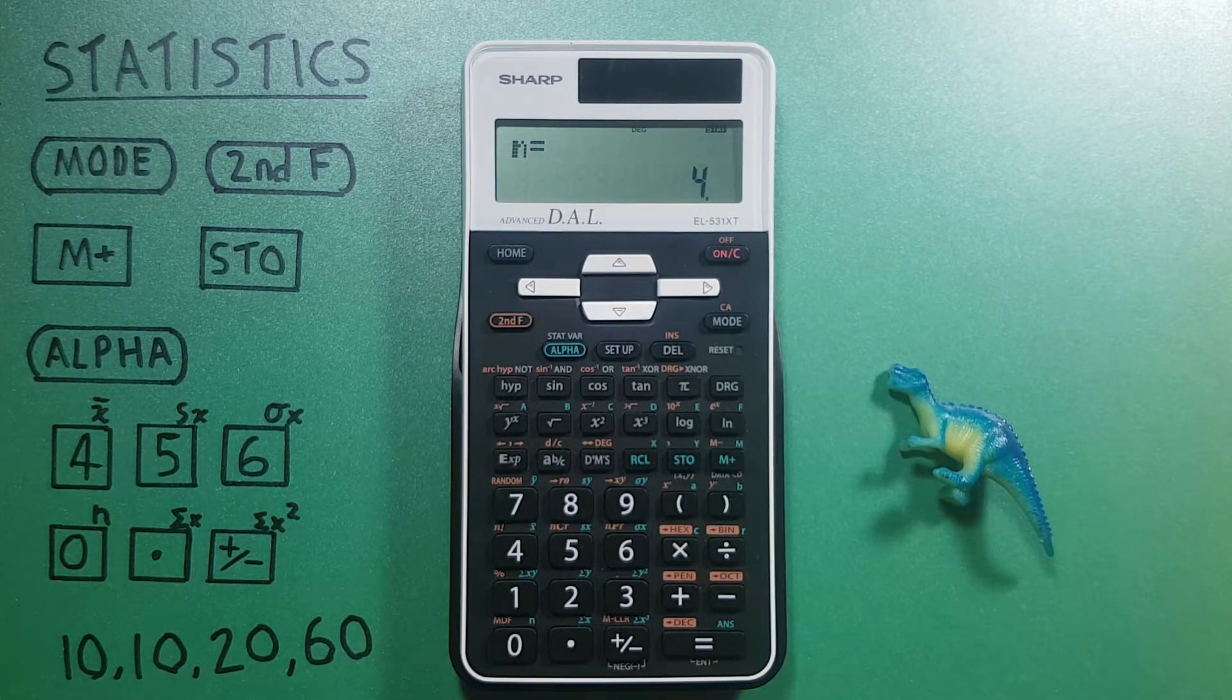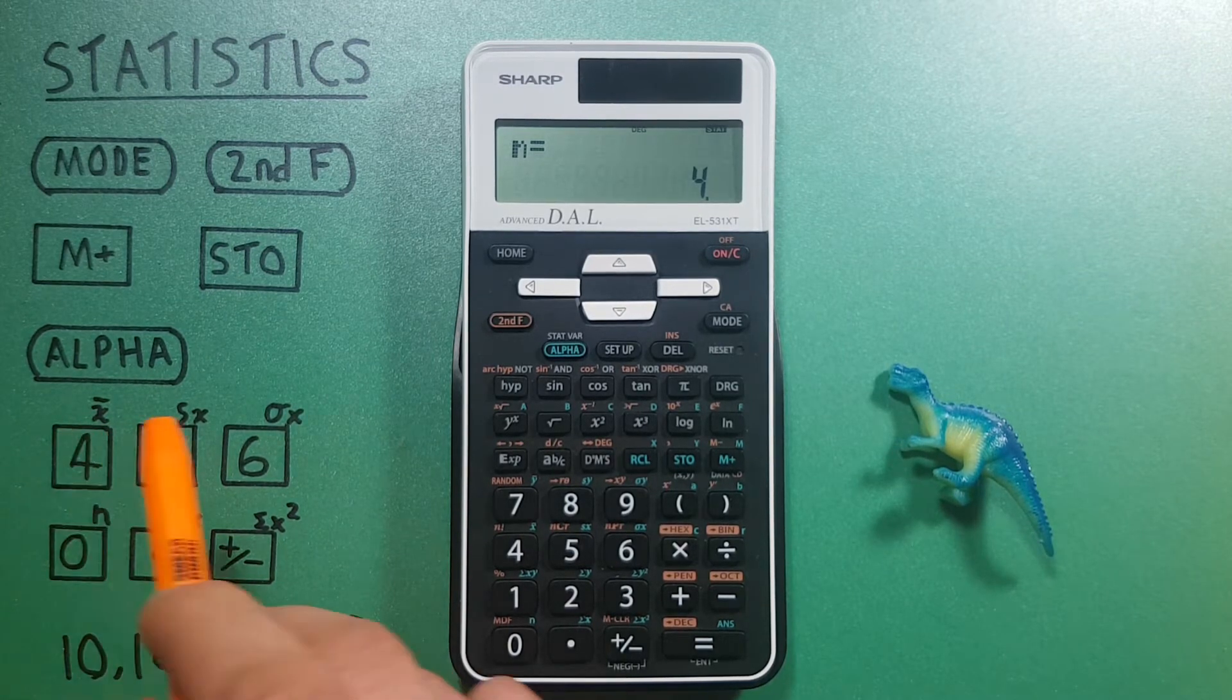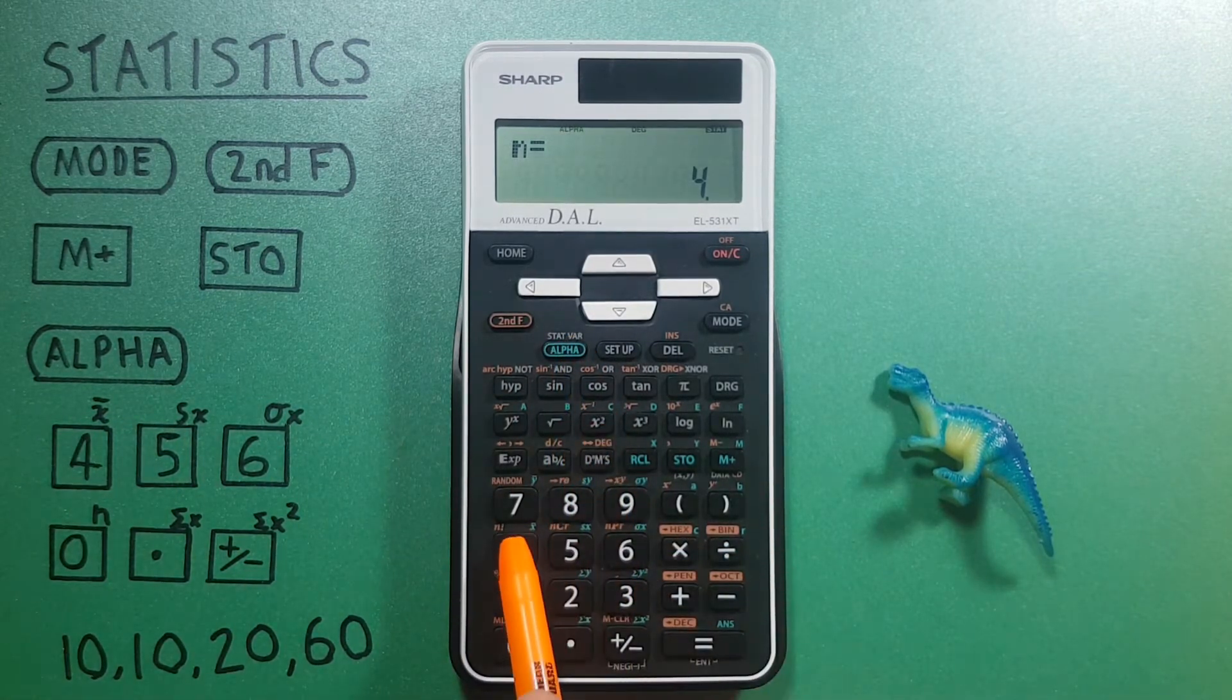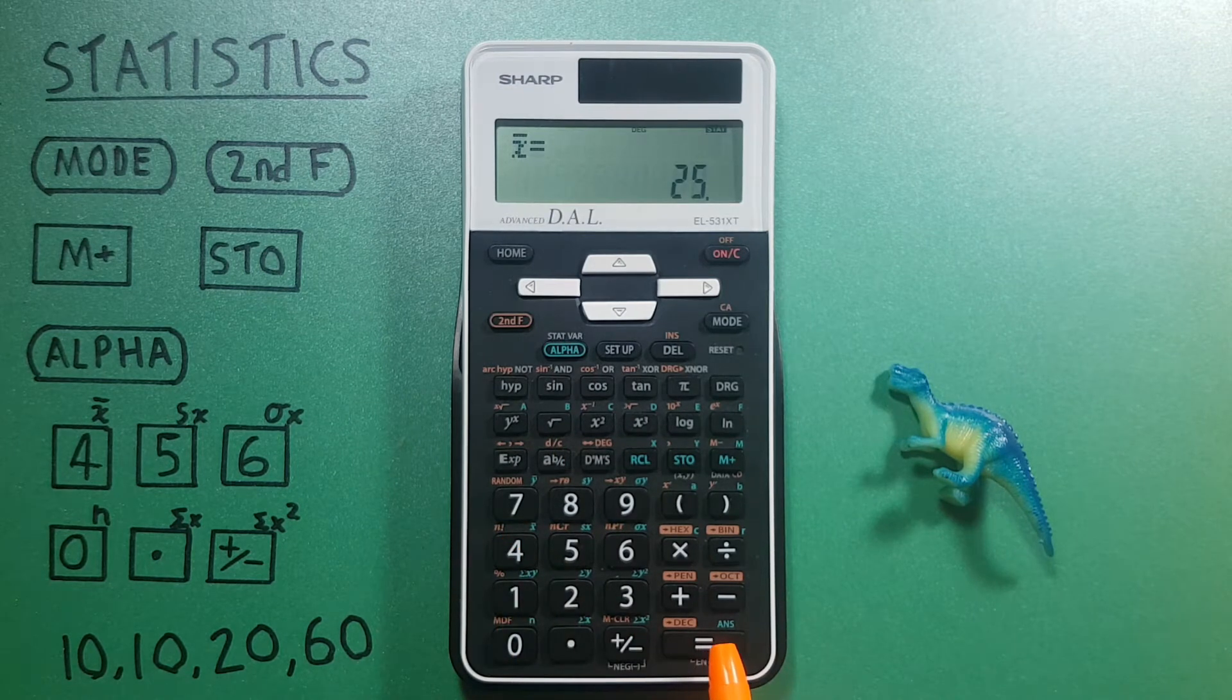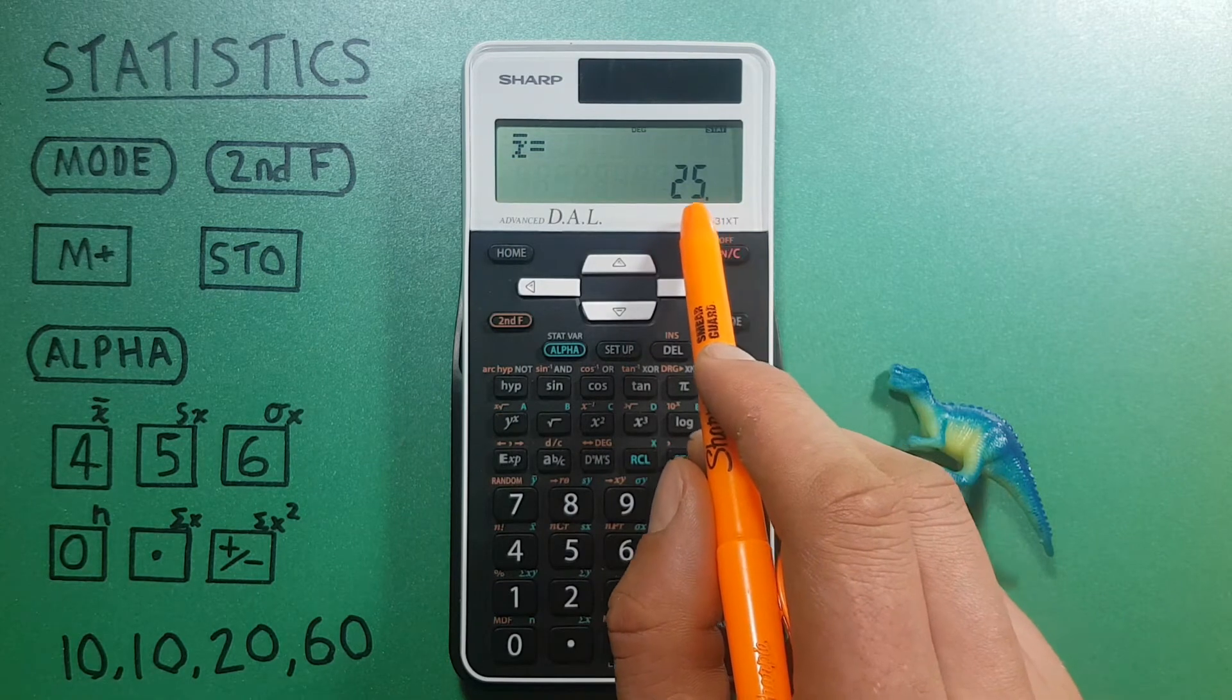The other statistics we can get are the mean under four. So again, we press alpha four equals, that's the X bar gives us a mean of 25.